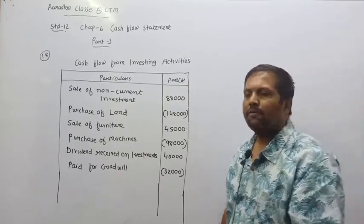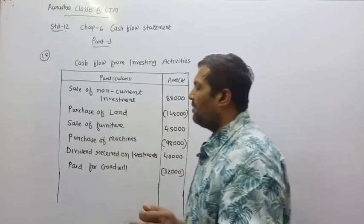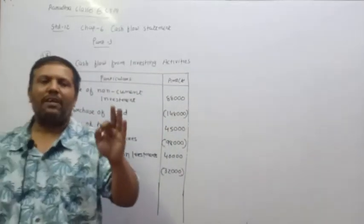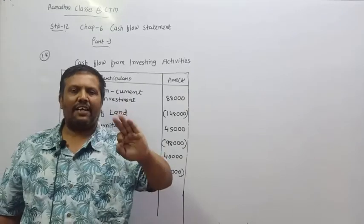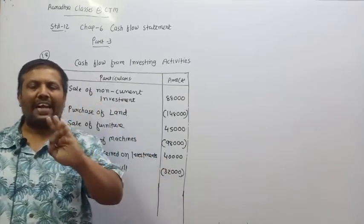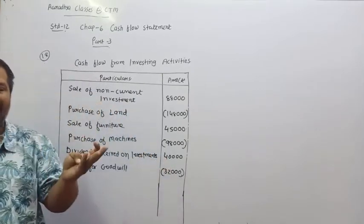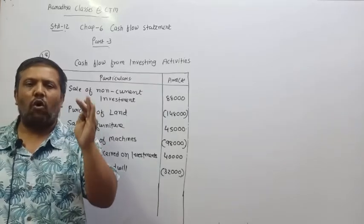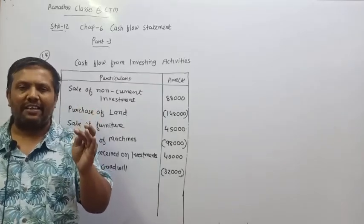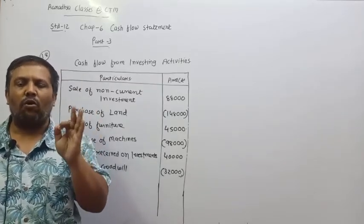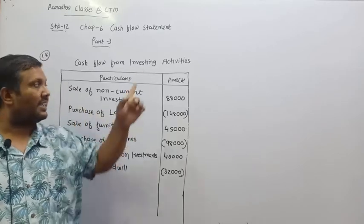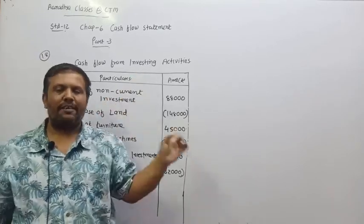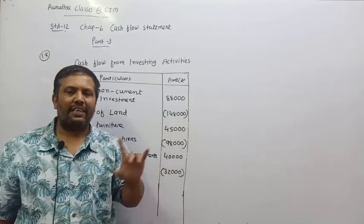Last item: loan borrow. We are borrowing money. A company can borrow funds from anywhere — relatives, non-banking finance companies, commercial banks, or nationalised banks. If we have a loan borrow, that is also a financing activity. It is not investing activity. So loan borrow will also not be considered in investing activity.